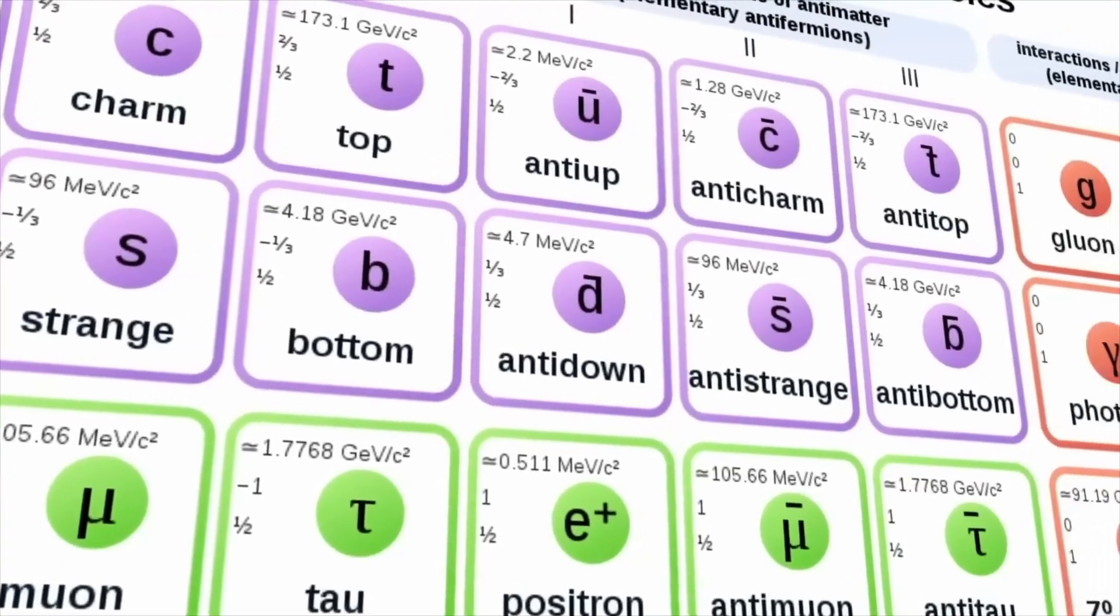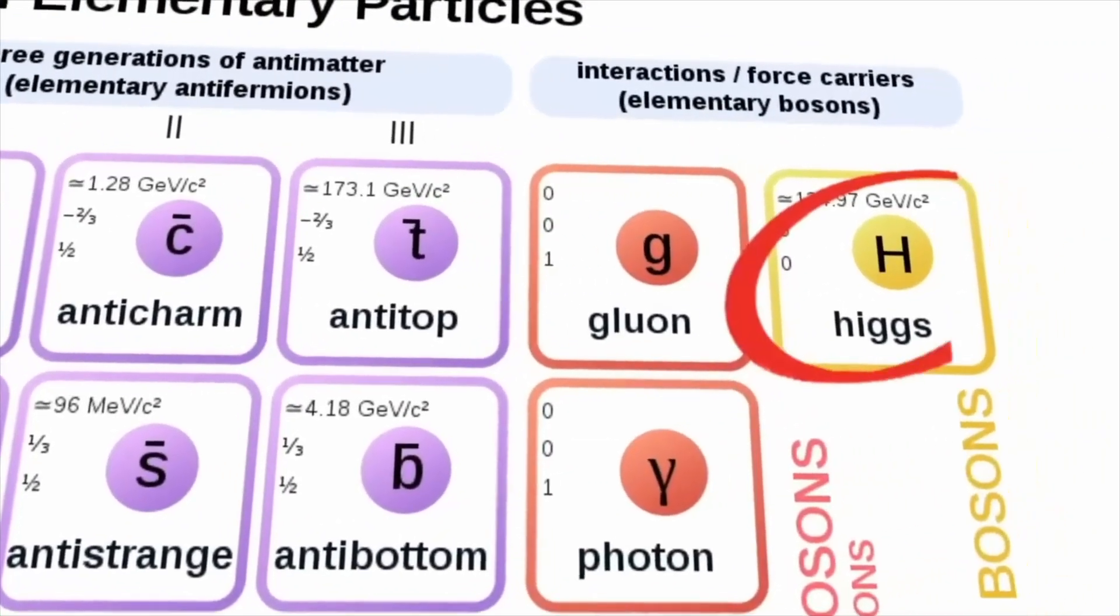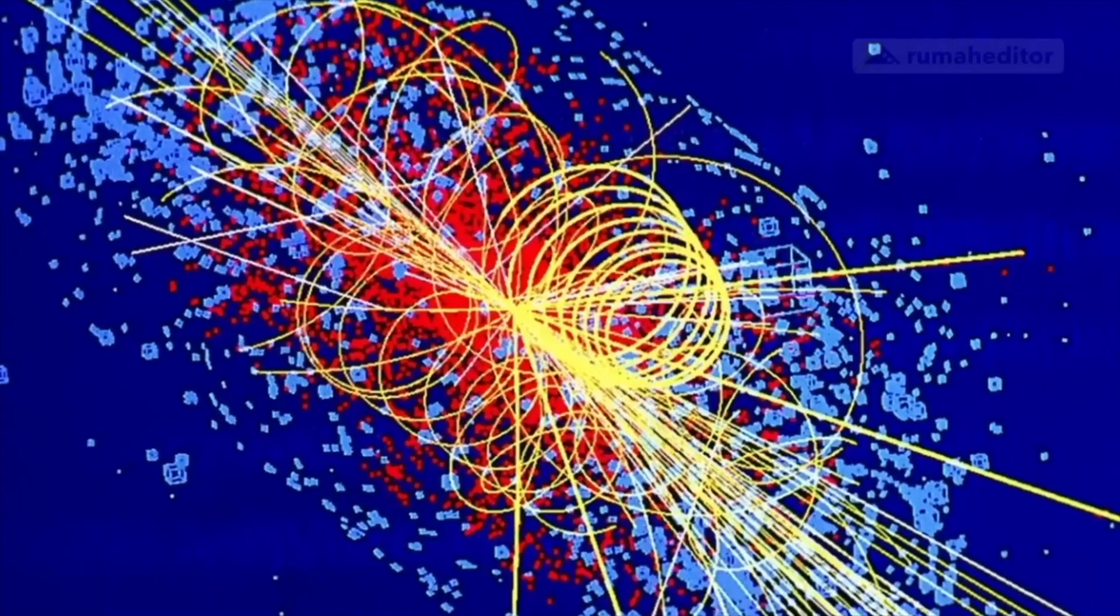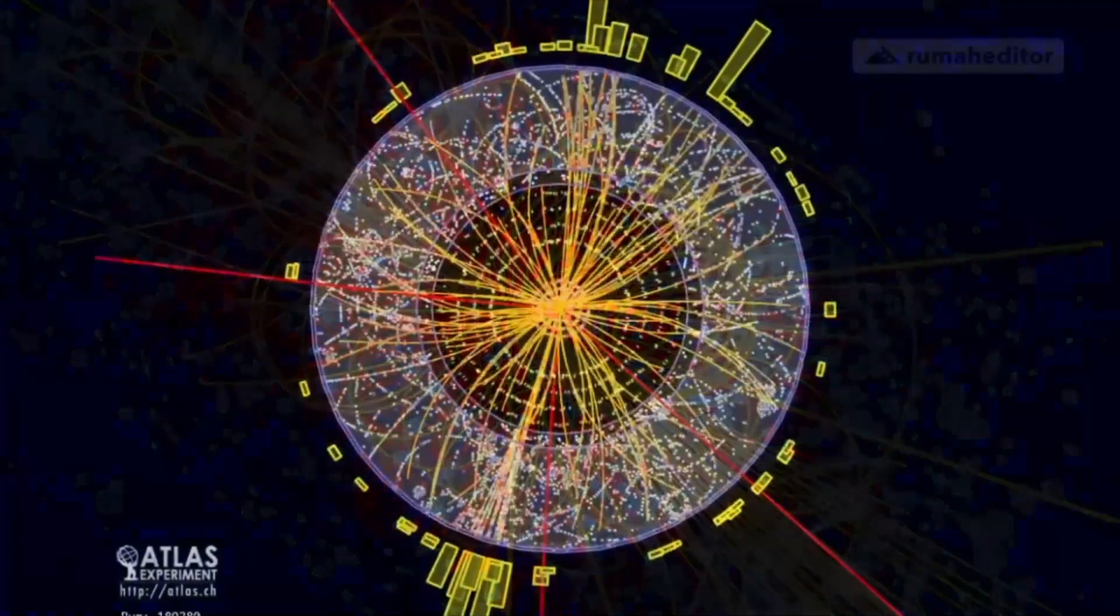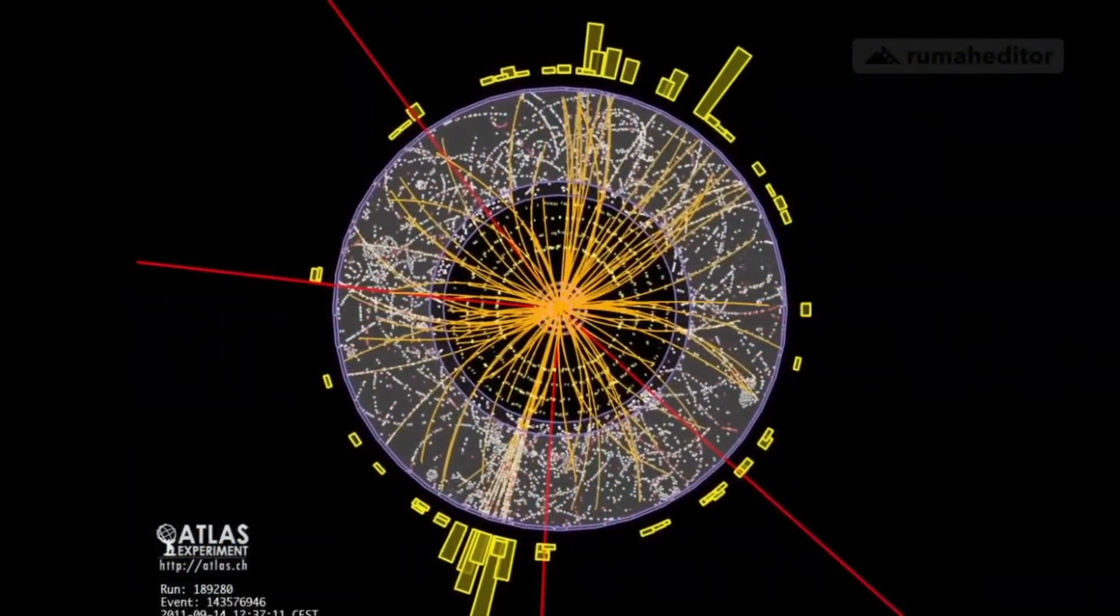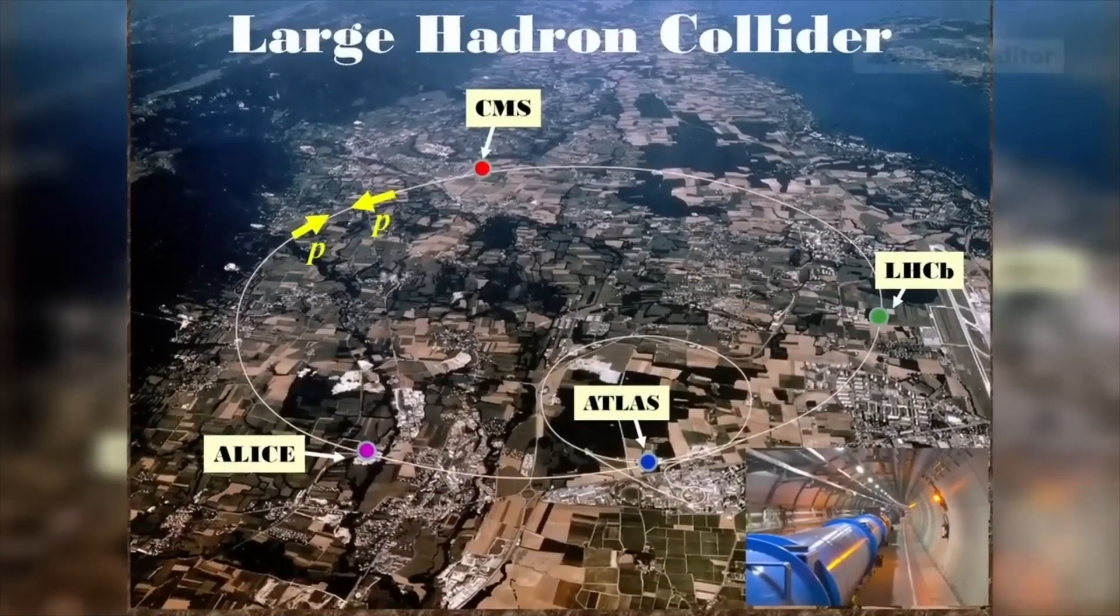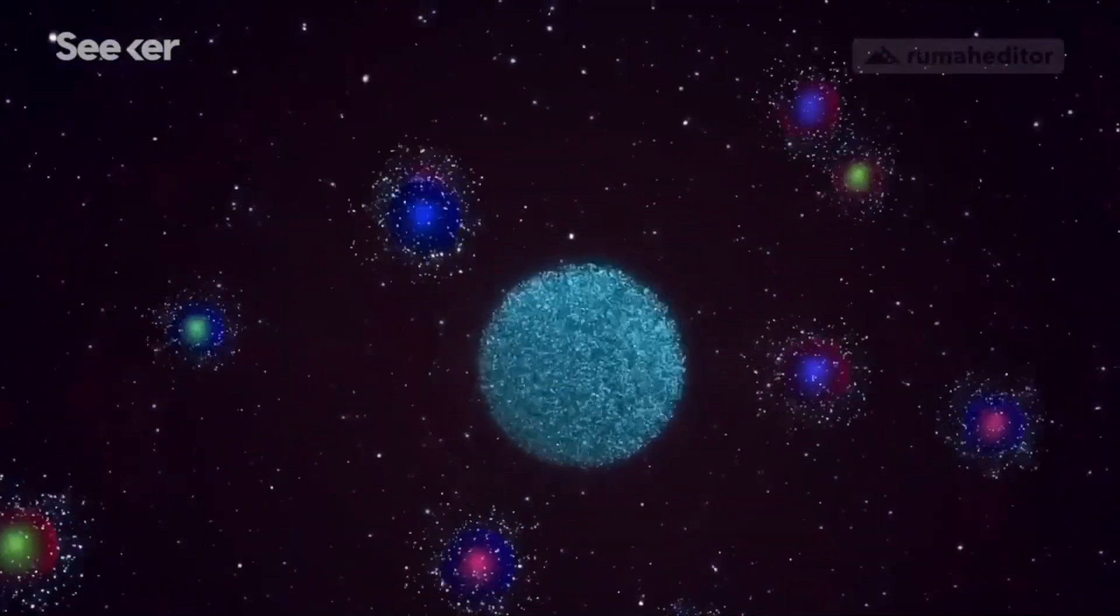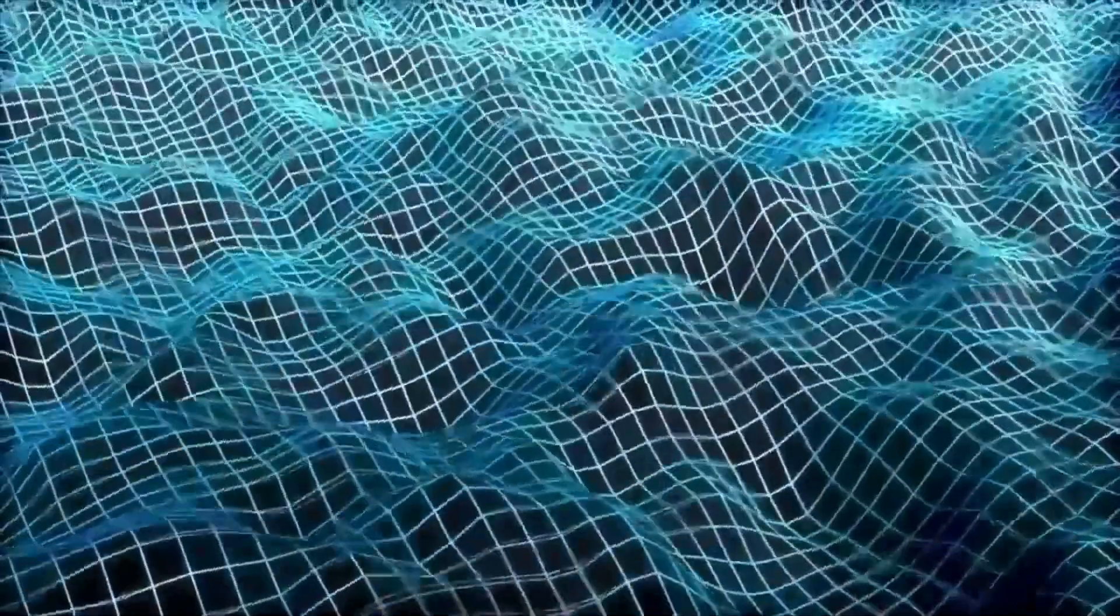Higgs boson. The Higgs boson, often called the God particle, is one of modern physics' most pivotal discoveries. In July 2012, researchers at the Large Hadron Collider confirmed the Higgs boson's existence, a landmark achievement that validated the hypothesis of the Higgs field, a theoretical quantum field proposed in the 1960s.